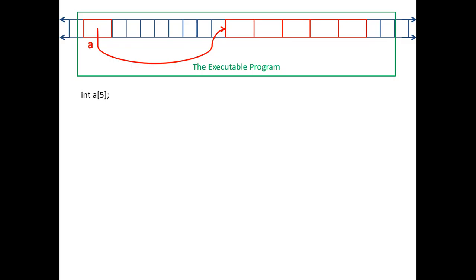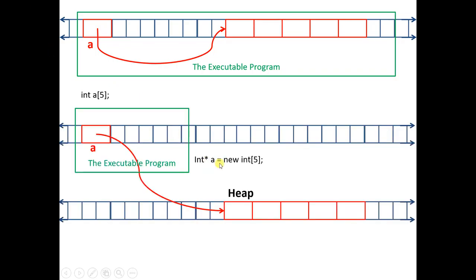When we are doing dynamic memory allocation, the story is a bit different. In dynamic memory allocation, when you say 'int* a = new int[5]', the only thing that is in your executable is your pointer. The actual array is outside of your executable somewhere in the shared memory between all applications — what we call the heap.